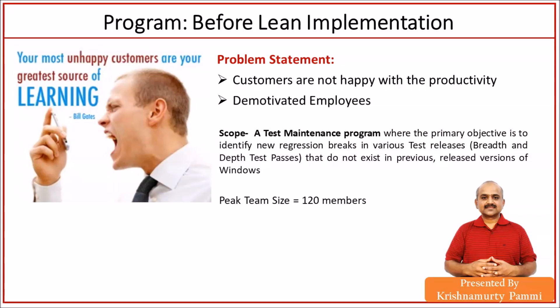The program was a big program consisting of 120 members at peak size. It was a test maintenance program where the primary objective was to identify new regression breaks in various test passes — breadth and depth test passes — so that existing functionality would not break. The whole objective was to identify bugs.